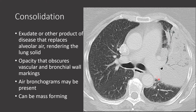Also notice how there is bulging of the major fissure. There's bulging because there is mass effect from the product accumulating within the lung parenchyma, creating consolidation and pushing back on the fissure. We can sometimes see this in the setting of consolidation. This was an example of a left upper lobe lobar pneumonia.